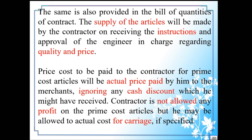The price cost to be paid to the contractor for prime cost articles will be the actual price paid by him to the merchants, ignoring any cash discount which he might have received. The contractor is not allowed any profit on the prime cost articles, but he may be allowed the actual cost for carriage if specified.